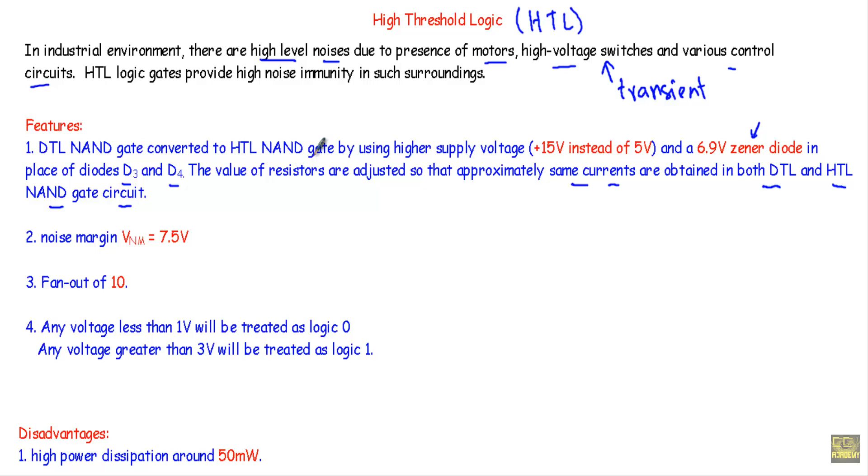As we will use zener diode in HTL logic circuits, it will provide better noise immunity than any other logic circuits. Therefore the noise margin will be equal to 7.5 volts. This high noise margin indicates that the HTL logic circuits will not get affected by noises very easily.